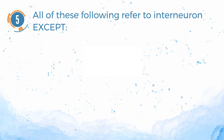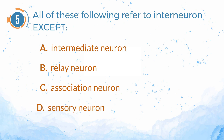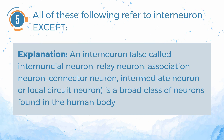Number 5. All of the following refer to interneuron except: A. Intermediate neuron. B. Relay neuron. C. Association neuron. D. Sensory neuron. The answer is D — sensory neuron. An interneuron, also called internuntial neuron, relay neuron, association neuron, connector neuron, intermediate neuron, or local circuit neuron, is a broad class of neurons found in the human body.